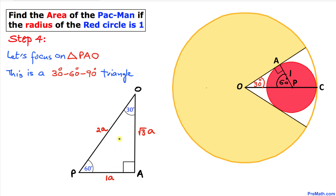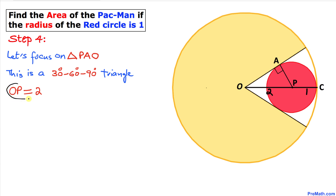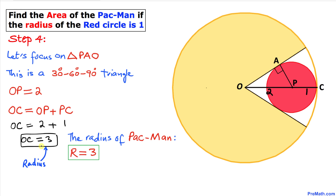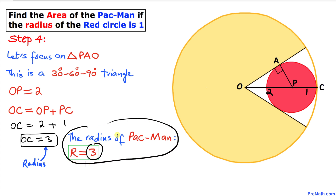By the 30-60-90 theorem, if side PA is one unit, then the hypotenuse OP is twice as much — so OP equals two units. We know that OC equals OP plus PC, so OC equals 2 plus 1 (the radius of the red circle), giving OC equals three units. Since OC is the radius of the big circle, the radius of the pac-man is three.